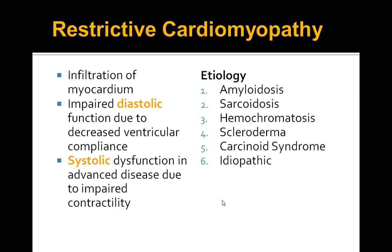Key point for board questions: the etiologies of restrictive cardiomyopathy are amyloidosis, sarcoidosis, hemochromatosis, scleroderma, and carcinoid syndrome, or idiopathic causes. If a patient presents with any of these conditions, think restrictive cardiomyopathy.